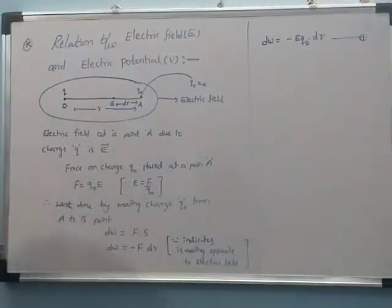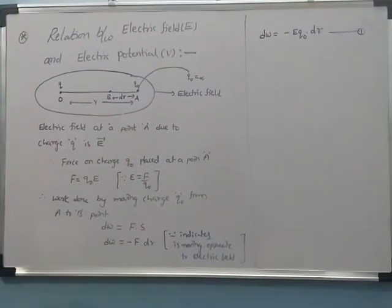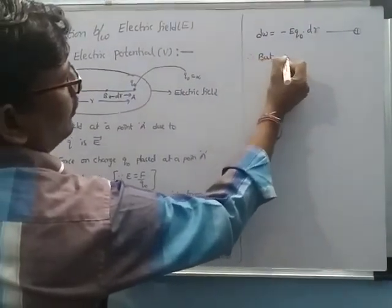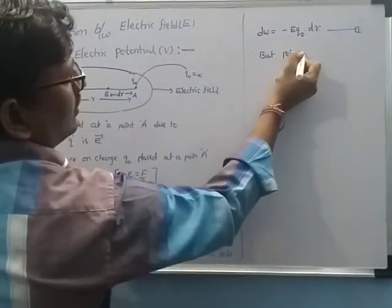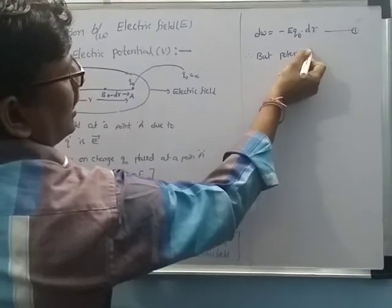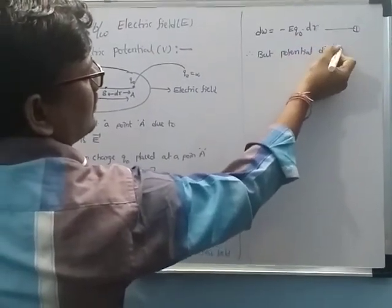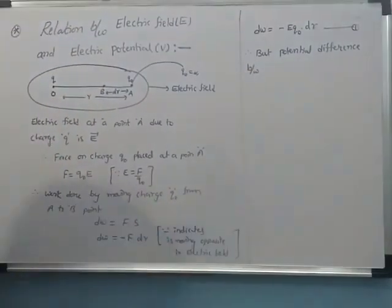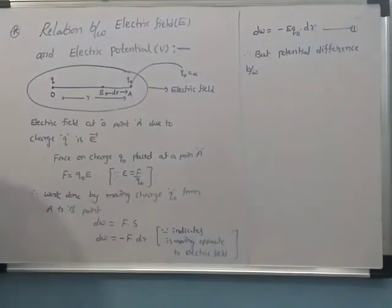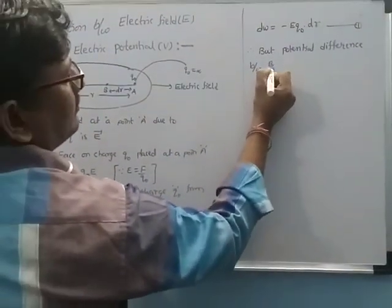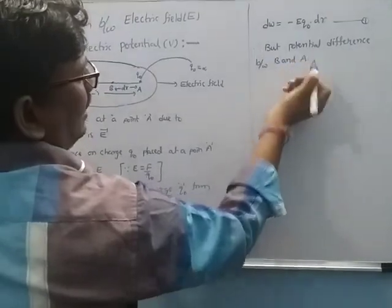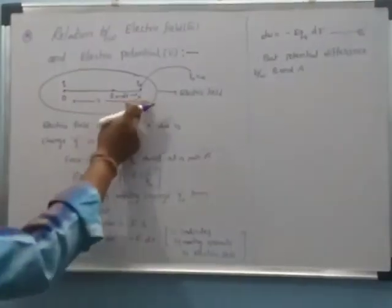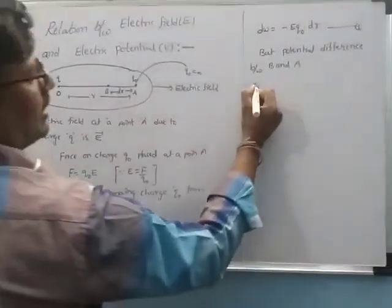We know the potential difference between points B and A. The potential difference between B and A will now be derived from the work done expression.